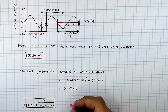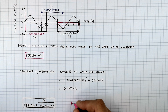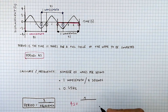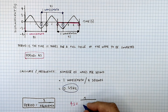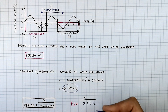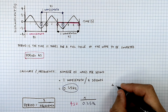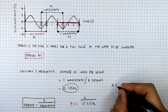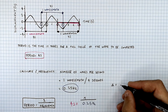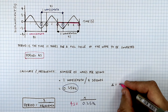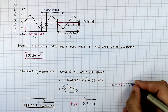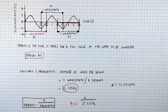Now if we substitute in all the numbers, you'll see that 4 seconds — the period — equals 1 over 0.25 hertz. If we rearrange, that means 1 equals period times frequency: 4 seconds times 0.25 hertz, which equals 1.